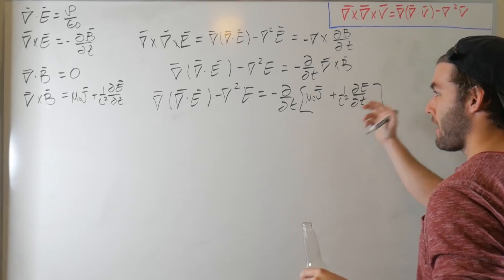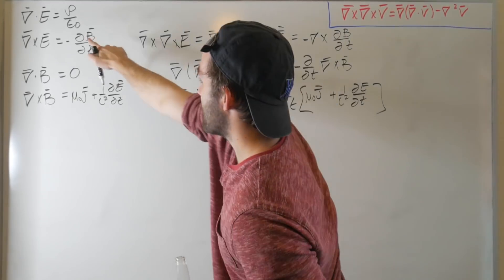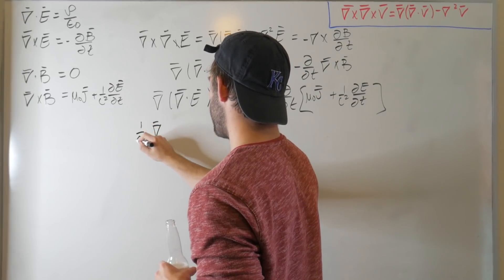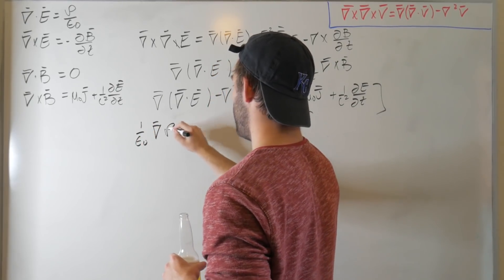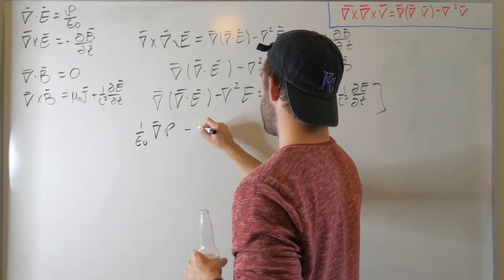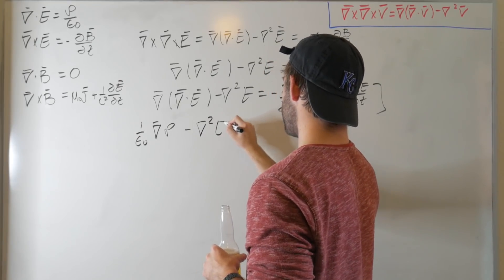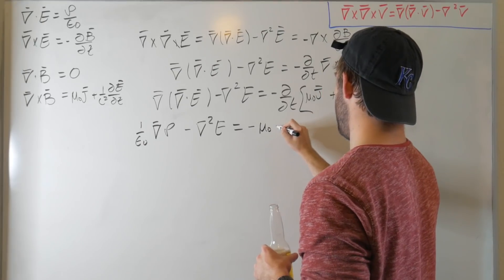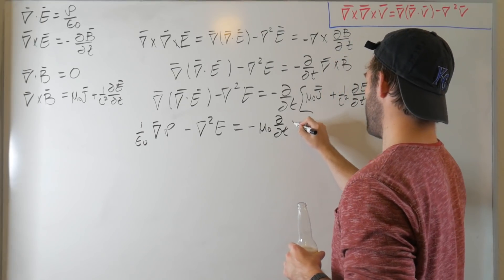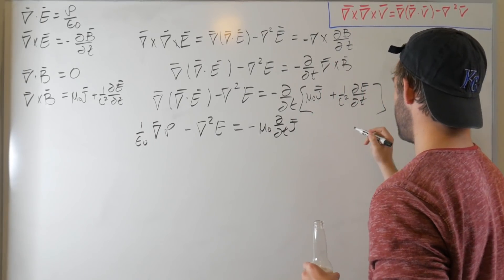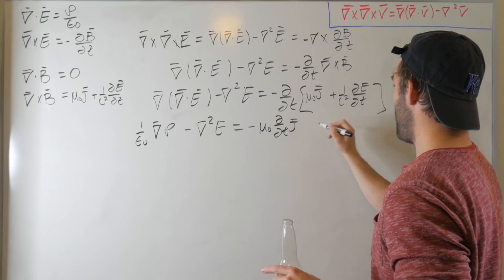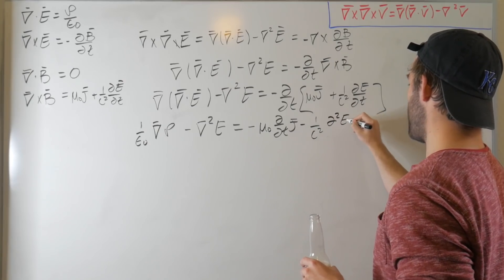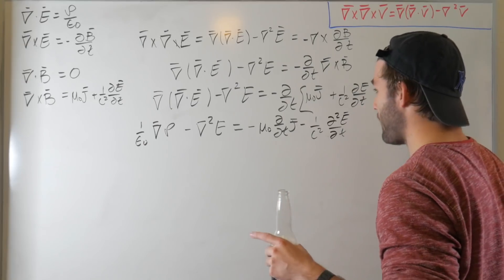Let's distribute everything out and substitute in Gauss's law. So we have the gradient of one over epsilon-naught times the charge density, minus the Laplacian, equals minus mu-naught times d/dt of J (the current density), minus one over c-squared times d²E/dt².